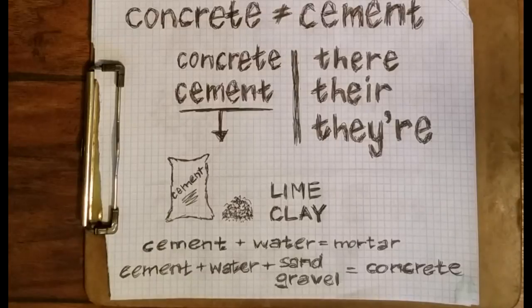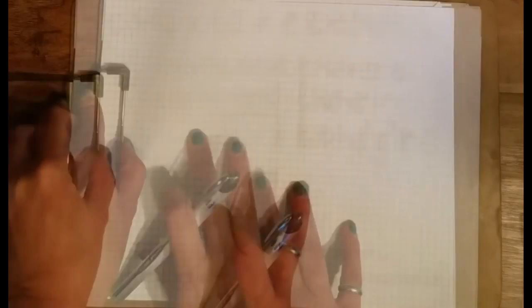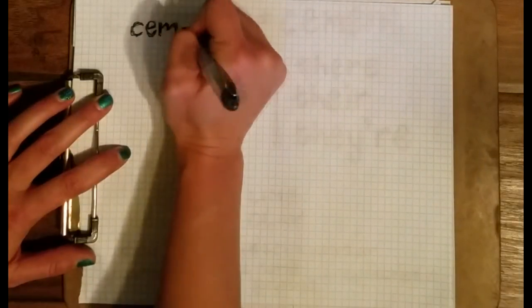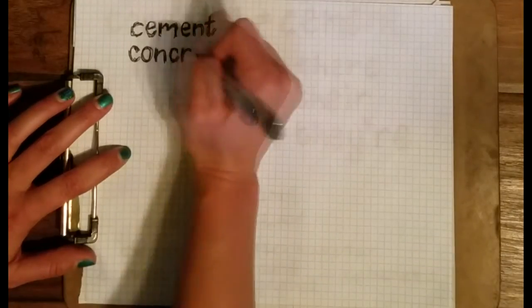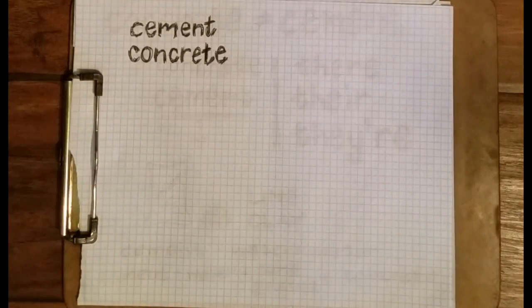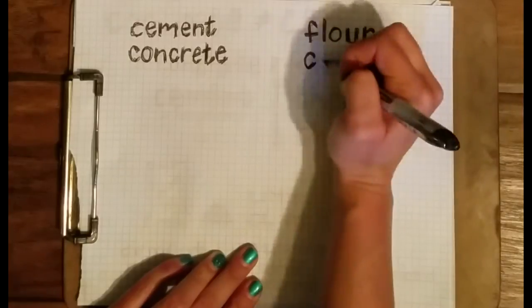Cement is an ingredient of concrete and is not analogous to concrete. Let's draw an analogy: cement is to concrete as flour is to cake.